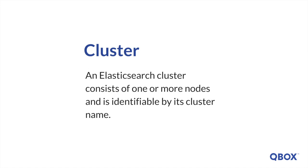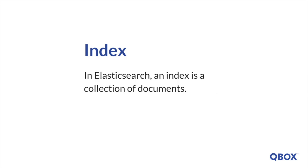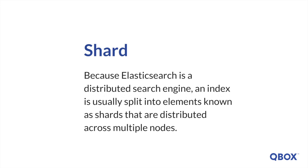An Elasticsearch cluster consists of one or more nodes and is identifiable by its cluster name. A node is a single Elasticsearch instance. In most environments, each node runs on a separate box or virtual machine. In Elasticsearch, an index is a collection of documents. Because Elasticsearch is a distributed search engine, an index is usually split into elements known as shards that are distributed across multiple nodes.